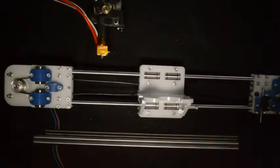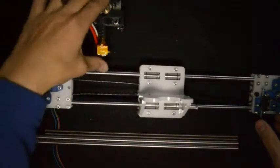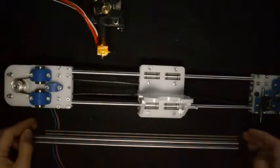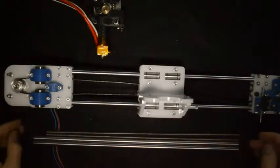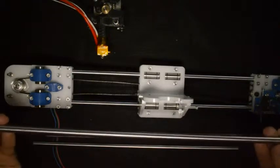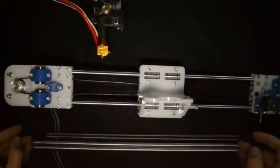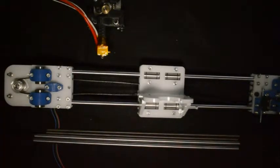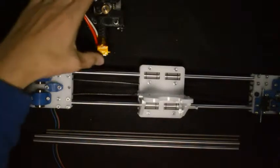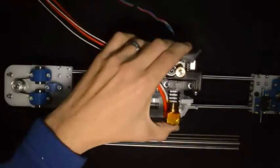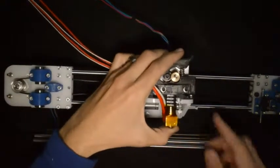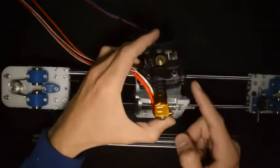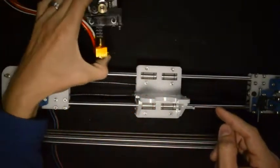For the last step of the Z carriage, what you will need is the extruder that you assembled previously, the two M5 threaded rods, and also the two linear rods. So we will mount the extruder to the X carriage with the M4 screws that are provided.